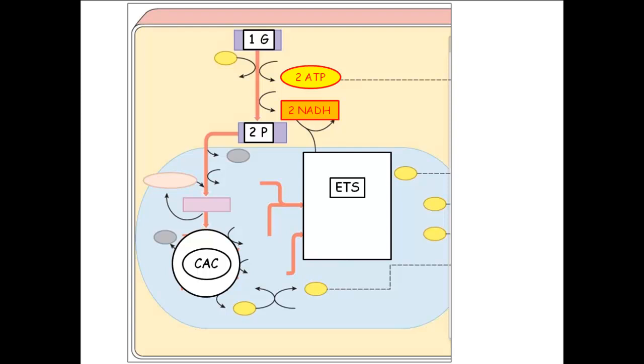Now, if oxygen is around, what happens to the pyruvates? Going to the mitochondria. They go into the mitochondria and they are converted into acetyl-CoA. So if I have two pyruvates, I have how many acetyl-CoAs? Two. The two pyruvates get converted to two acetyl-CoAs.